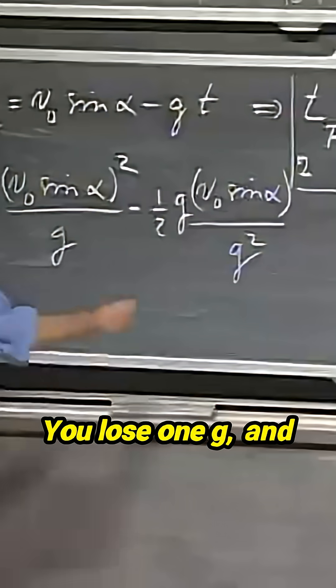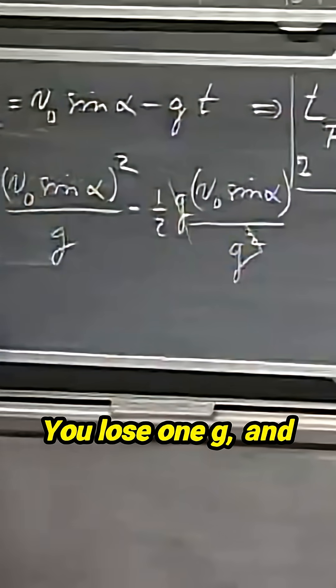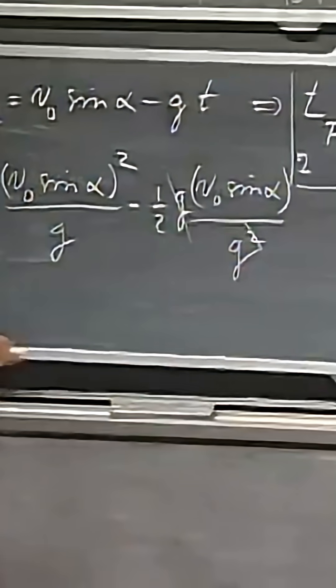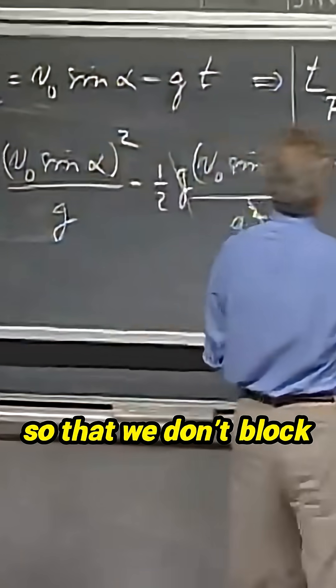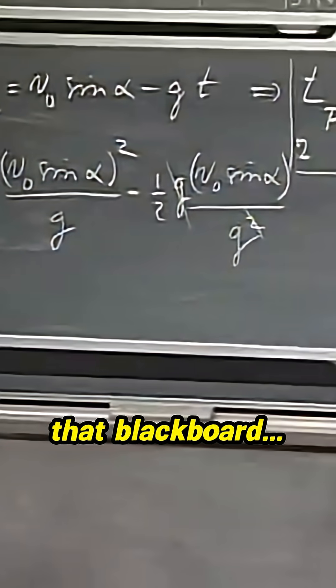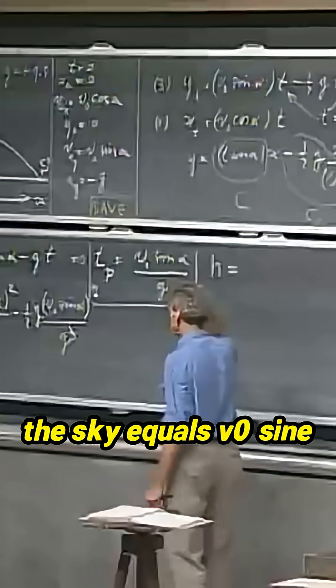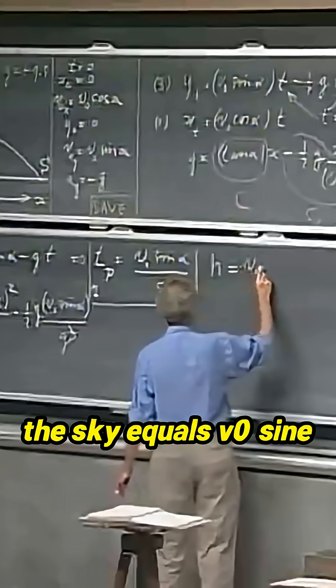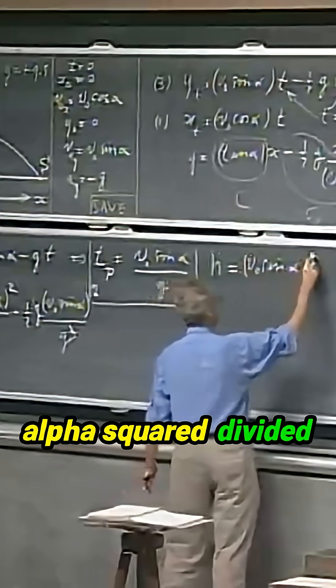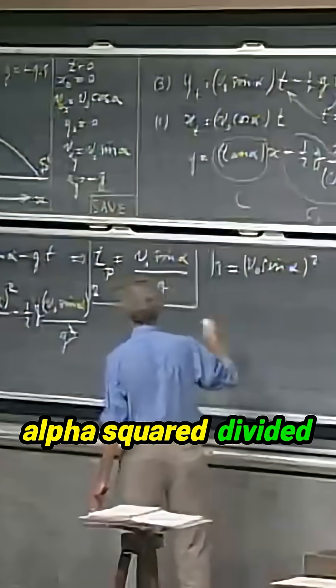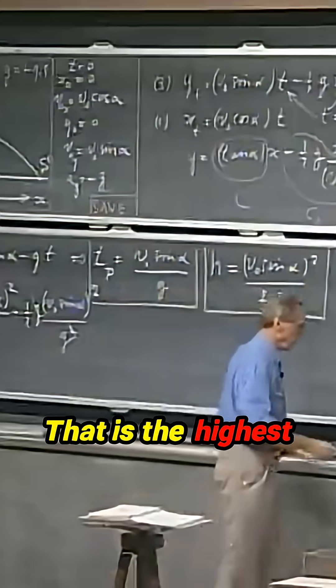It is t squared. You lose one g, and you will find then that the highest point... Let's write it down here so that we don't block that blackboard. The highest point in the sky equals v zero sine alpha squared, divided by 2g. That is the highest point.